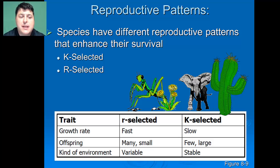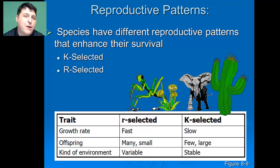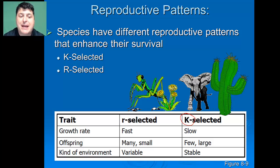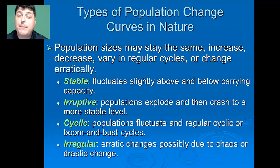K-selected species have a slow growth rate — their intrinsic rate of growth is very slow. They typically have very few offspring; those offspring are large and require additional parental care either before or after birth. They need to exist in stable environments because their populations stay at or around the carrying capacity, which is why they're called K-selected species.